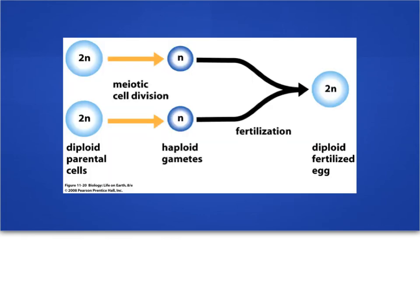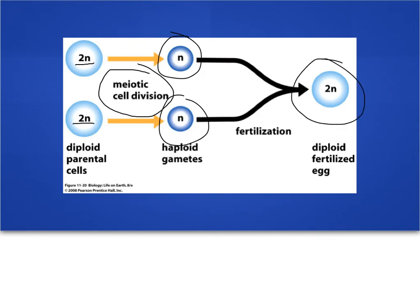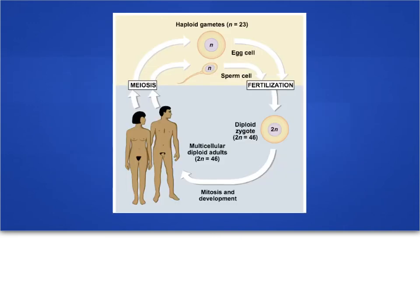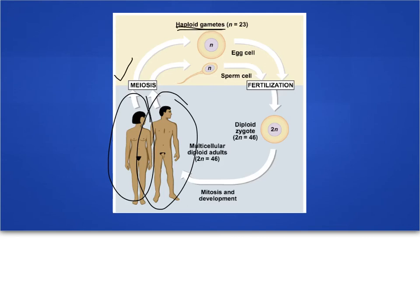Here we can see the same thing in picture form. Starting with a cell from your mother and a cell from your father, those cells undergo meiosis to create haploid eggs and sperm. The sperm then fertilizes the egg to give us a diploid fertilized egg. Meiosis is an essential process because without it we cannot create haploid cells, and those haploid cells need to come together to create a diploid organism.